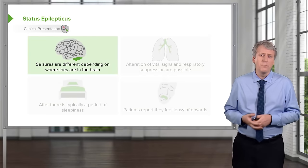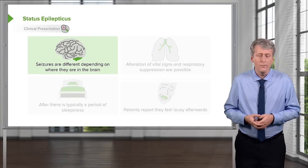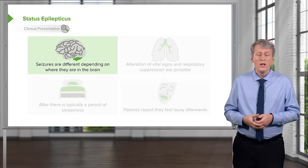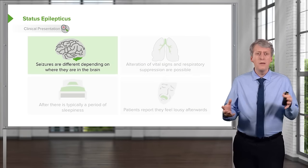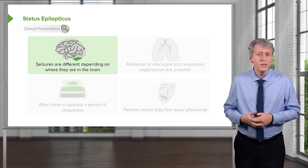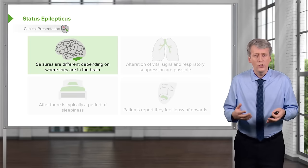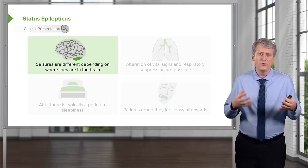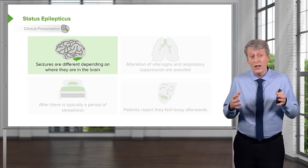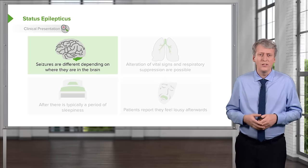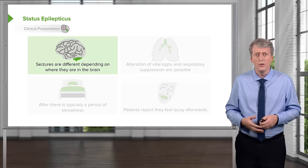Seizures are different depending on where they are in the brain. A frontal lobe seizure may result in bizarre behavior. A temporal lobe seizure may result in depression or mood and affect changes. A generalized seizure is what we'd expect to see, with motor movements predominantly appearing.